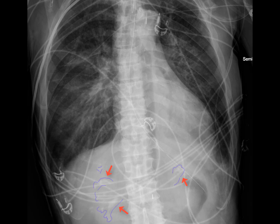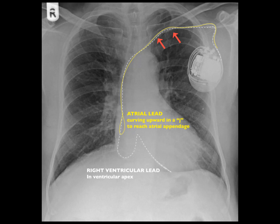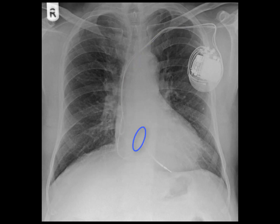Here we have a patient with a left chest dual lead pacemaker. The lead extends through the left subclavian vein, and one of the leads curls up into what is presumably the right atrial appendage, and the other extends through the tricuspid valve into the right ventricle.